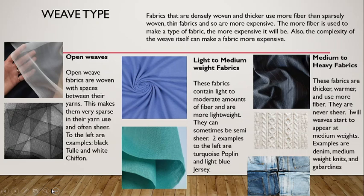Also, the complexity of the weave itself can make a fabric more expensive. Looking at general examples of fabrics from thin to heavy: our most sparse, open, thin, light fabrics typically feature open weaves — usually plain weaves, which are just a basic over-under pattern, but with a little bit of space between each yarn. This makes them very sparse and often sheer.